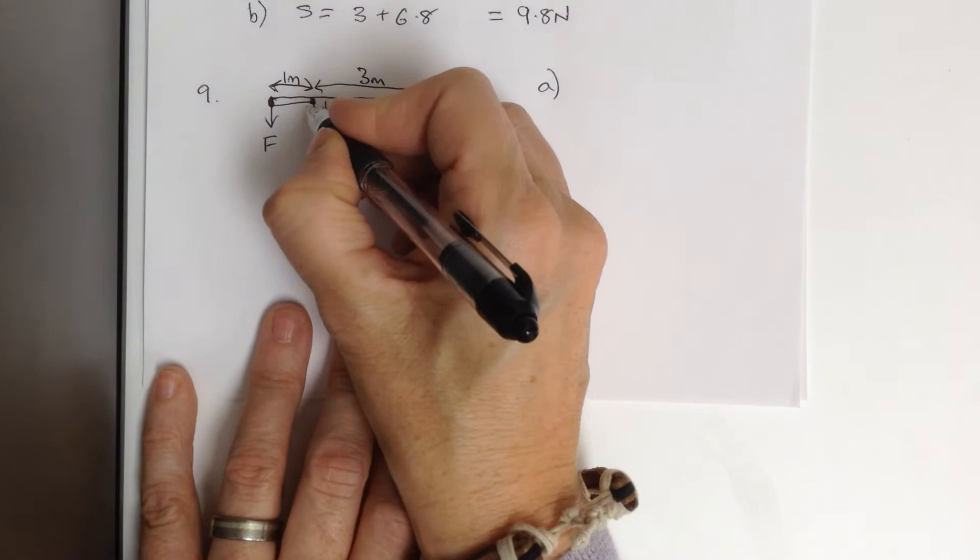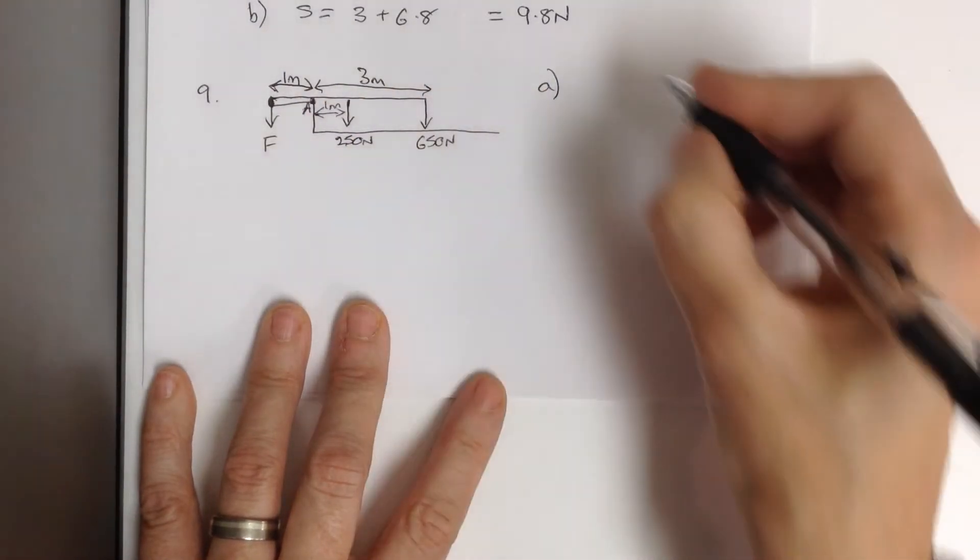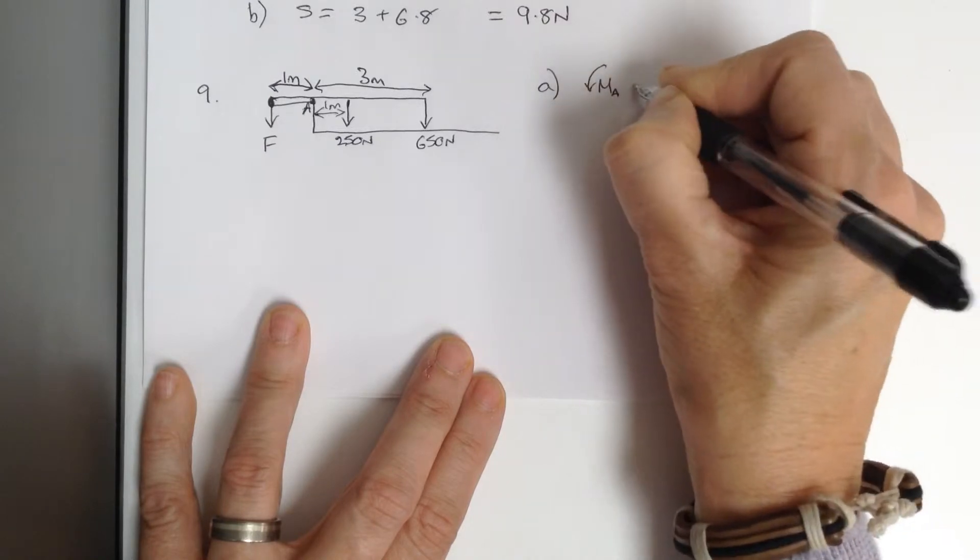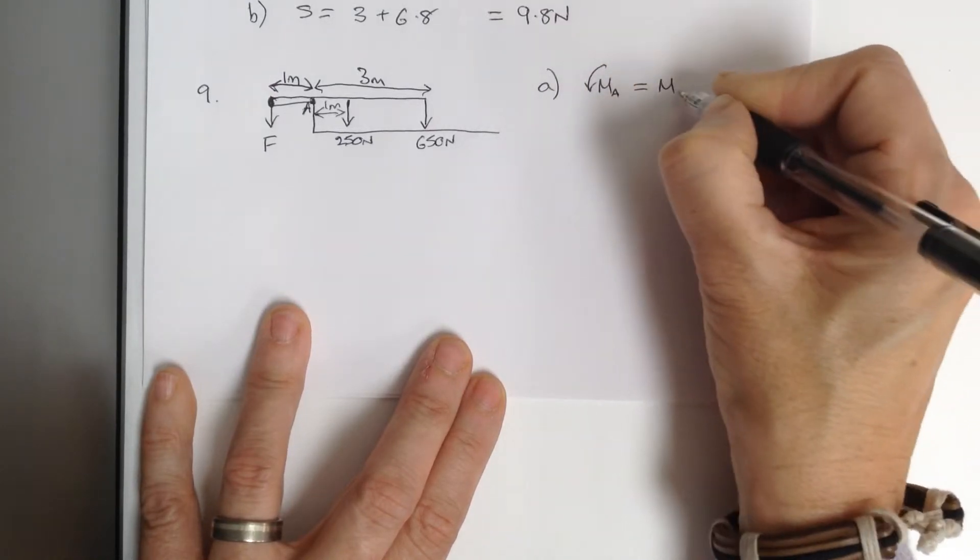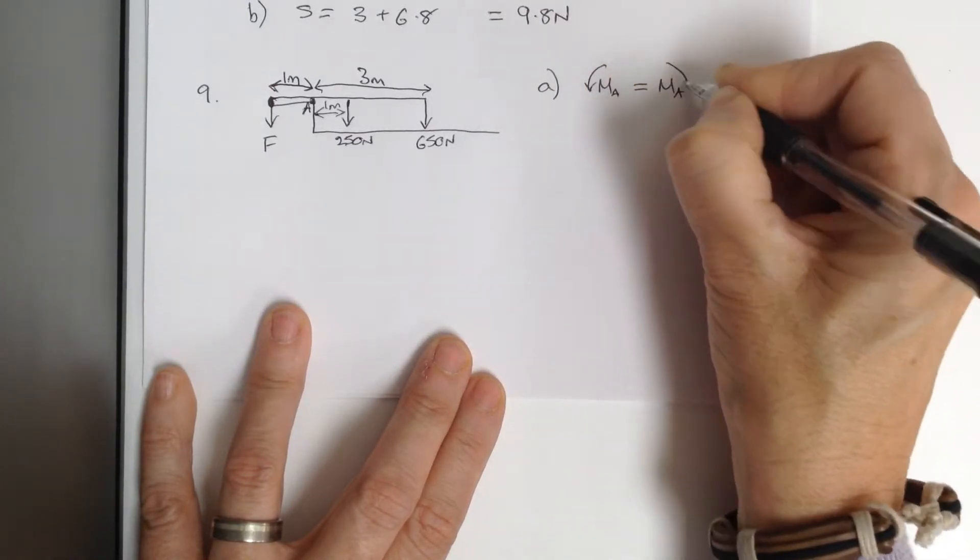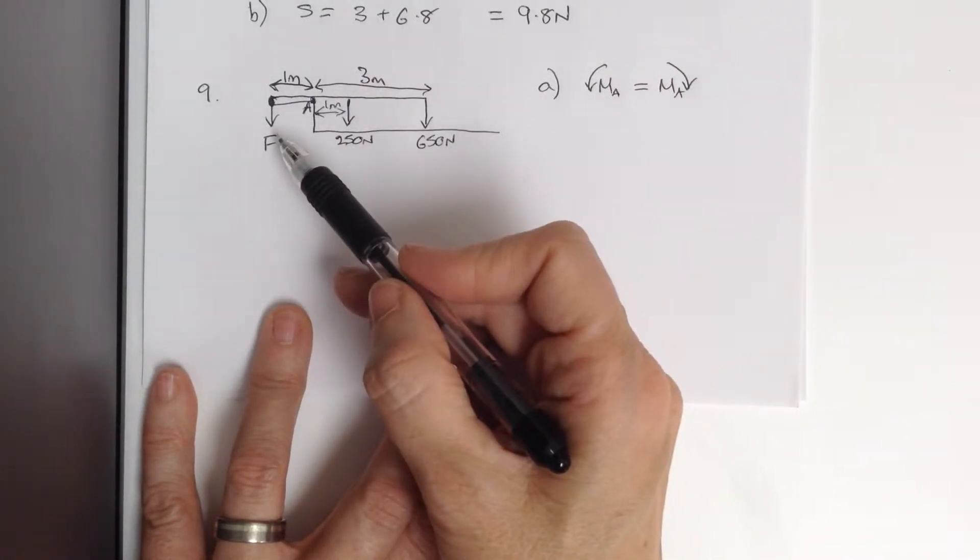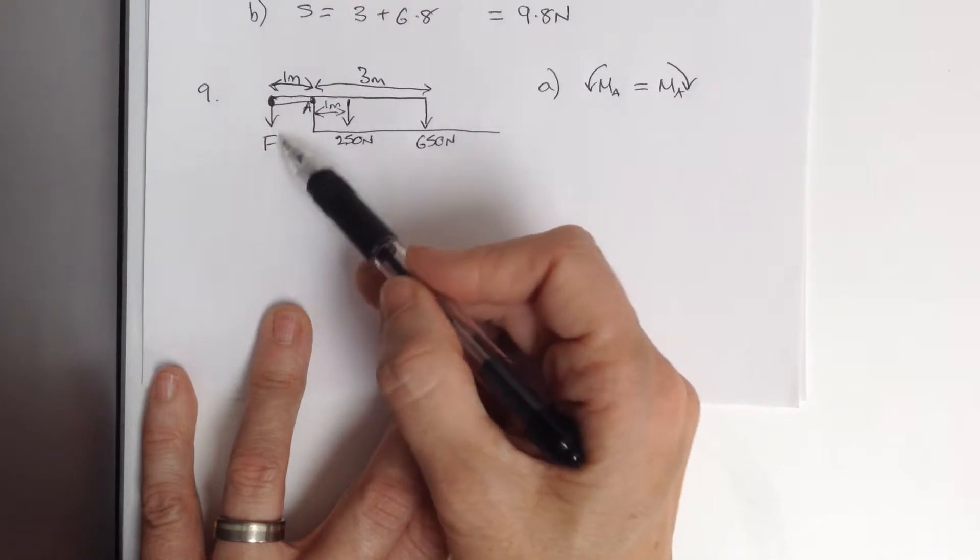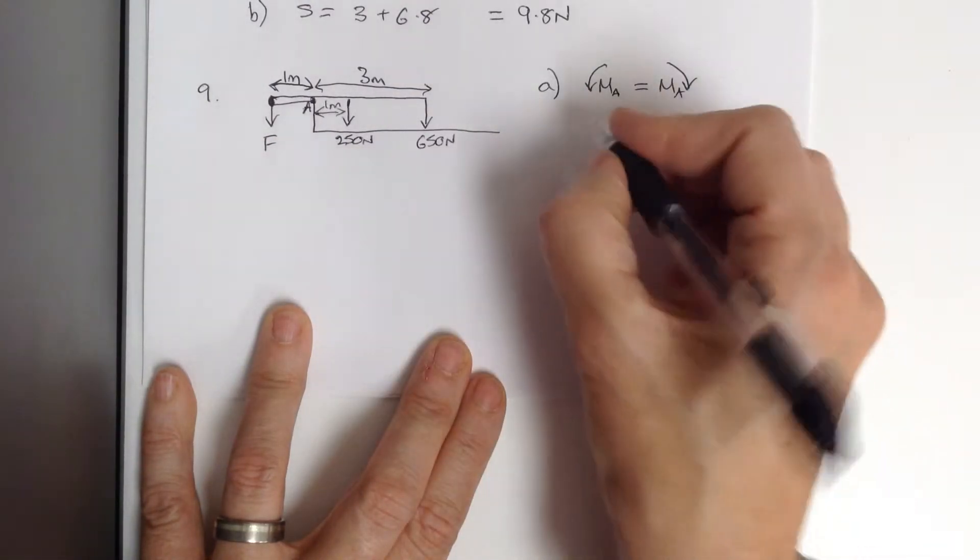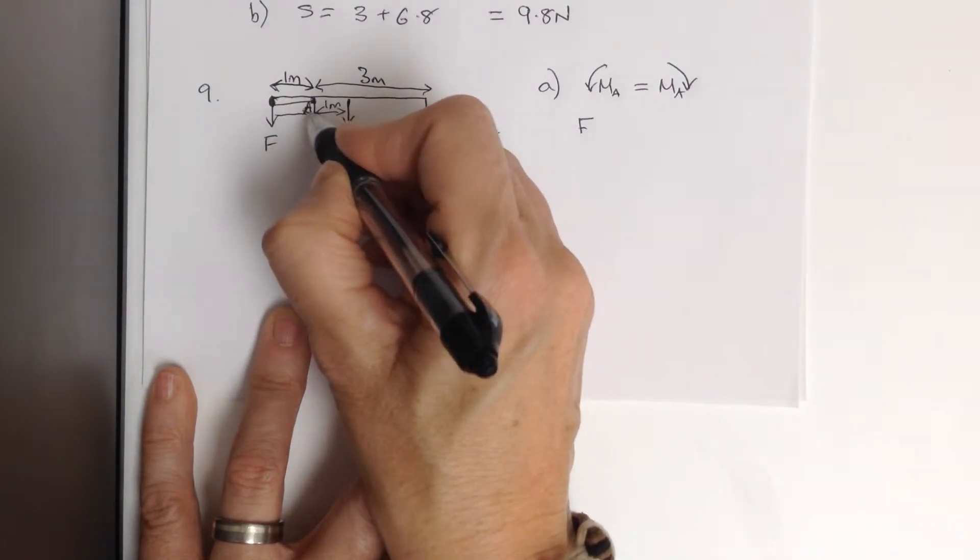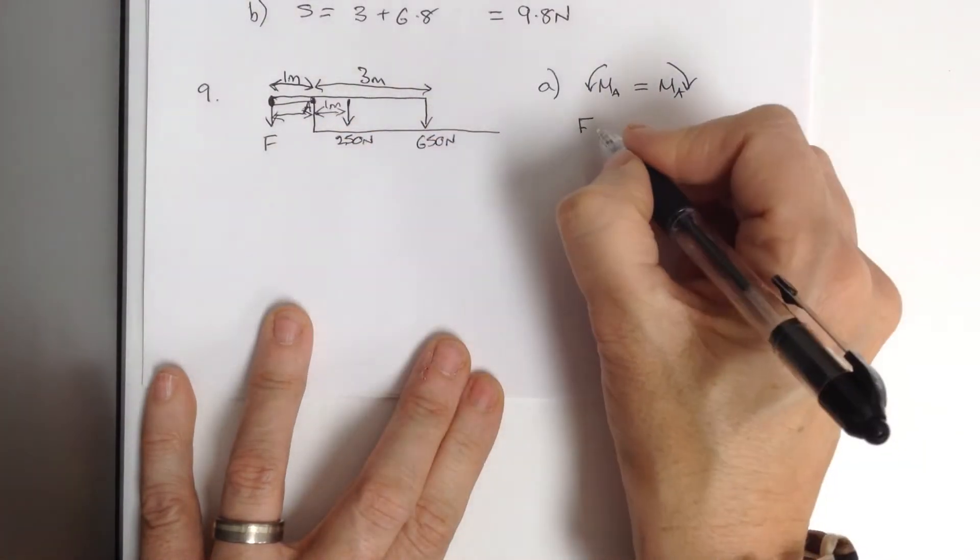Well, taking moments, if I call this point here A, if I take moments about A anticlockwise, because it's in equilibrium, it's going to be equal to the moments of A clockwise. So, the anticlockwise force here is the force by the bolt F, which is one metre away.